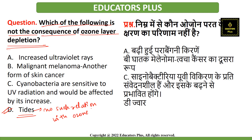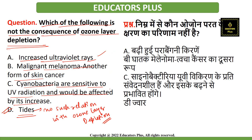Options A, B, and C are all consequences of ozone layer depletion — such as increased UV rays, skin cancer, and cyanobacteria sensitivity to UV radiation. But tights have no relation to ozone layer depletion. So option D is the correct answer — tights is not a consequence of ozone layer depletion.